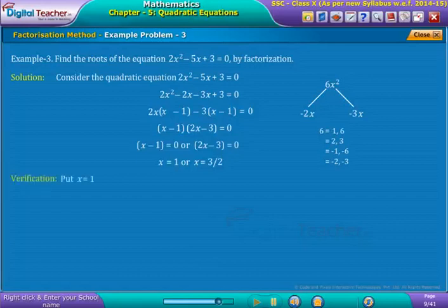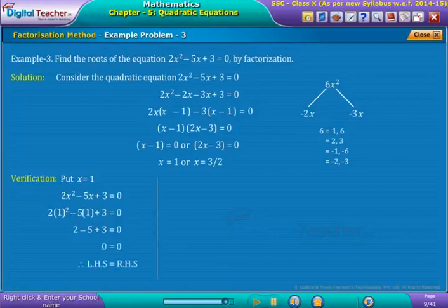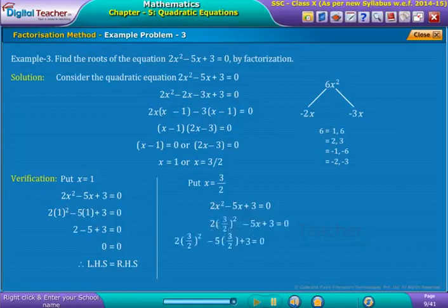For verification, put x is equal to 1 in the given equation. Thus, by further solving, we get both LHS and RHS equal. Similarly, put x equal to 3 by 2. We again get both LHS and RHS equal.